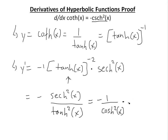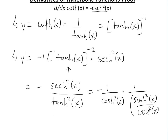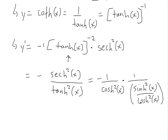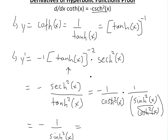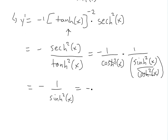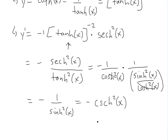And tanh squared of x, by definition, equals sinh(x) divided by cosh(x), all squared. Substituting these in, we can see cancellations: the cosh squared terms cancel, and we are left with negative one divided by hyperbolic sine squared of x, which by definition equals negative hyperbolic cosecant squared of x.